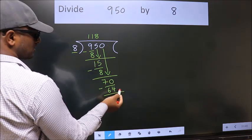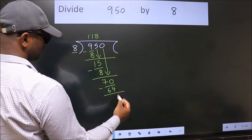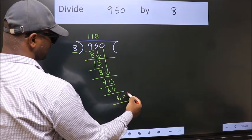No more numbers to bring it down. So we stop here. This is our remainder. This is our quotient.